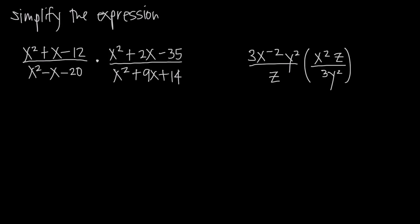Looking at this example, we can see that we have 3 in the numerator of this first fraction. We can cancel that with the 3 from the denominator of this second fraction, so 3 will cancel with 3. What about this y squared term? We have y squared in the numerator and y squared in the denominator, and because these fractions are multiplied together we can cancel them out. Notice also that we have z in the denominator of our first fraction and z in the numerator of our second fraction, so those will cancel as well.